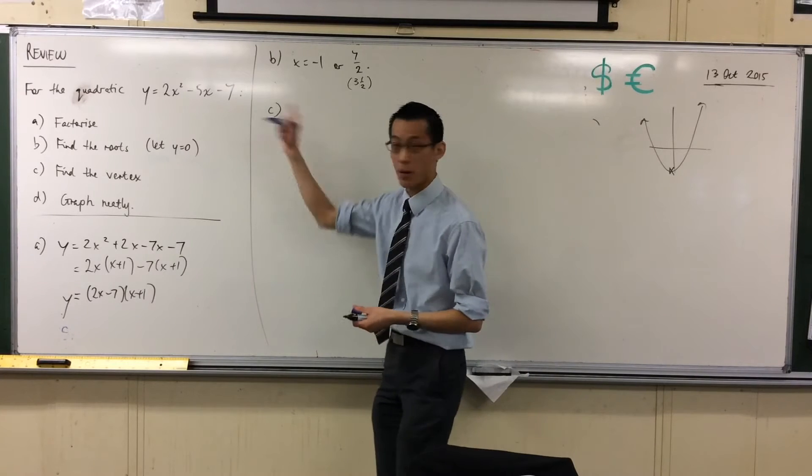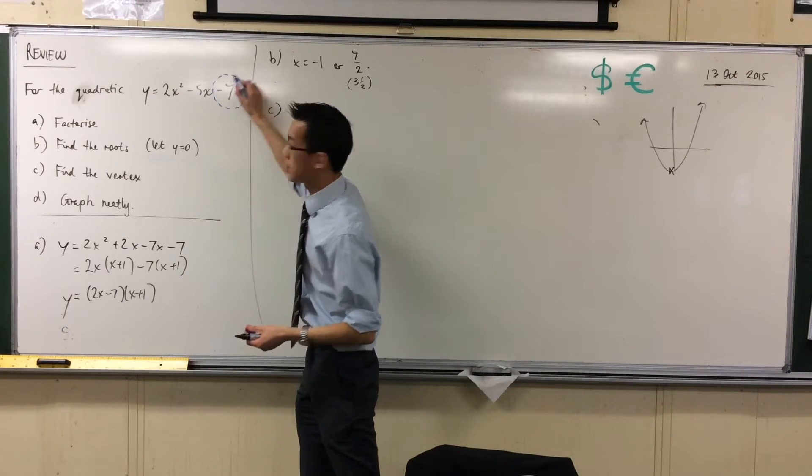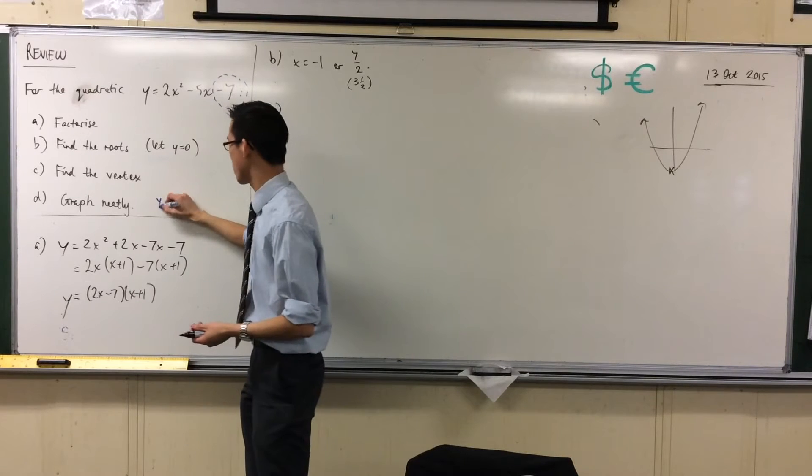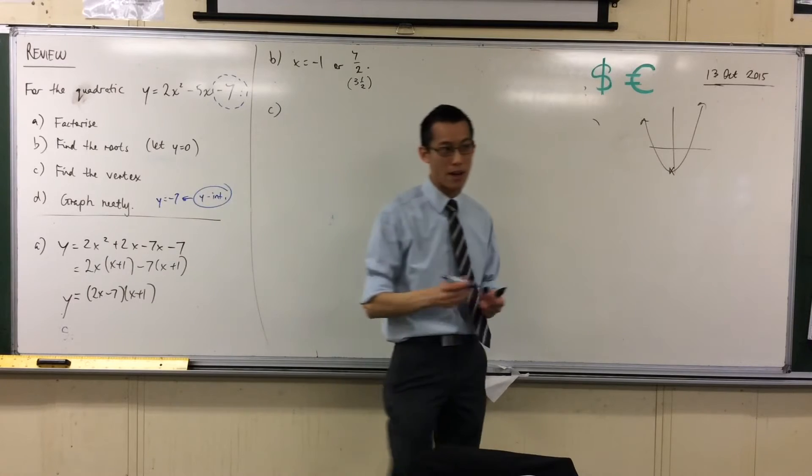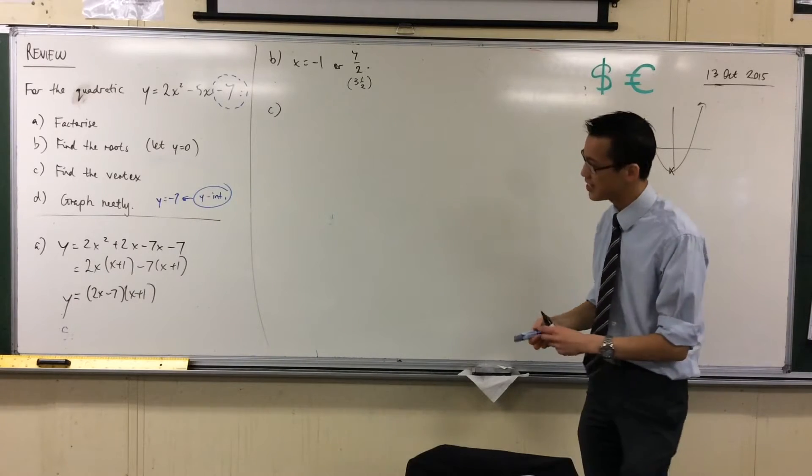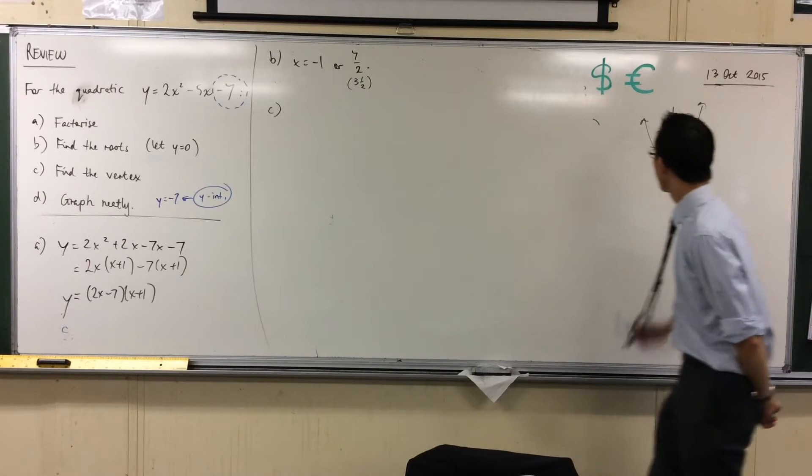How do I read the y-intercept off this equation? Yeah, it's just this number on the end, right? Just that guy there. So, y equals negative 7 is the y-intercept. I'll file that away for later. Unfortunately, though, it doesn't end up helping me all that much to find the vertex. How do I find this guy? What am I going to do?